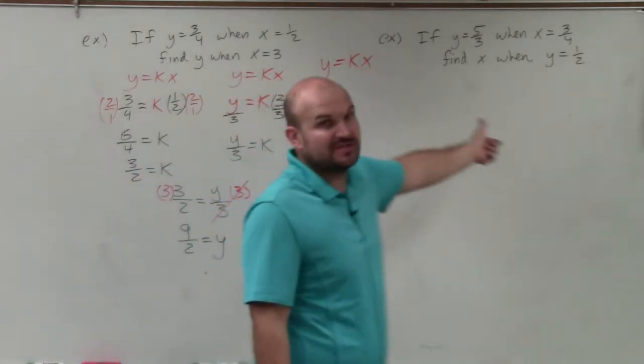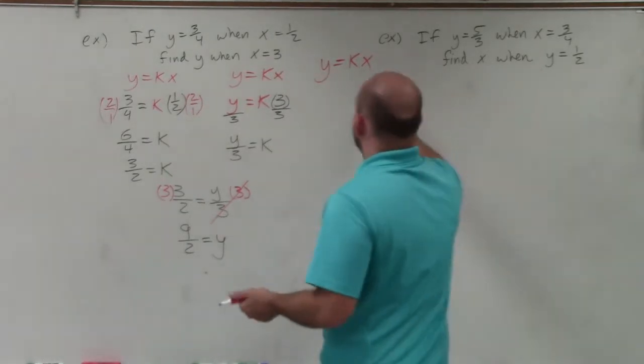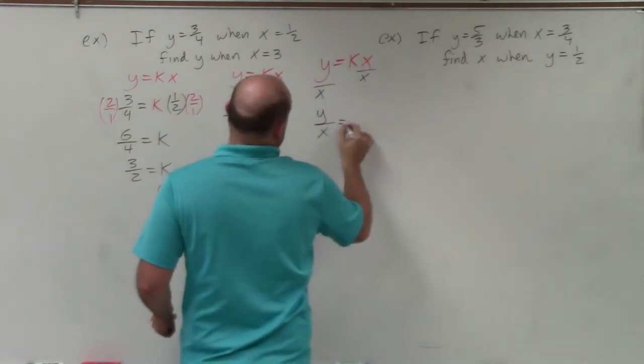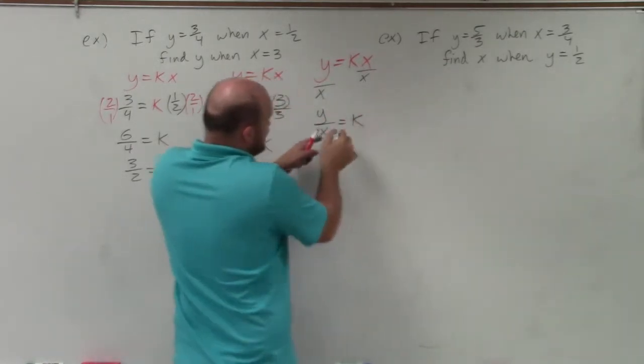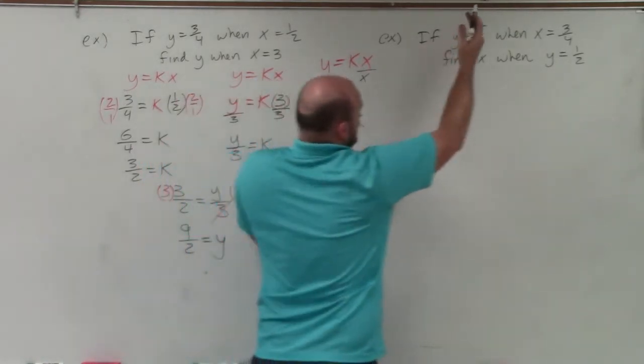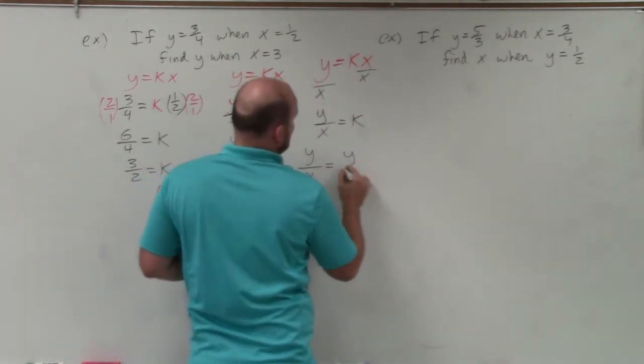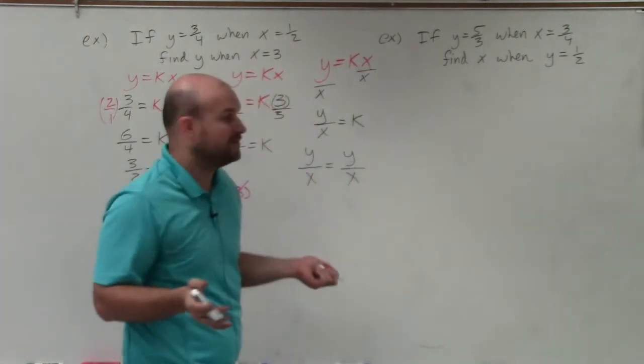In this case, you can do the same thing. But the main thing I want you to understand is when you solve for y over x is equal to k. So therefore, basically, k, which is the constant, because both of these y varies for x, you can basically rewrite y over x is equivalent to y over x, and then solve for your missing variable.